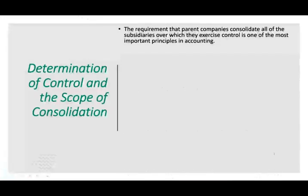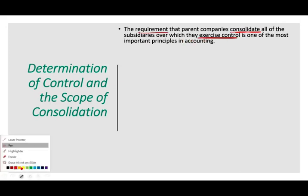The requirement is that a parent company consolidate all subsidiaries over which they have exercised control. The term 'control' is very important. If you have control over another company, you have to consolidate that company. We will define control using both a quantitative and a qualitative factor. Sometimes we might have control without reaching the quantitative threshold.